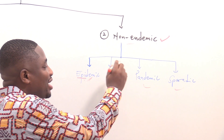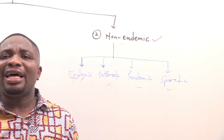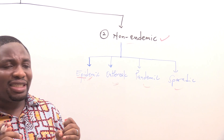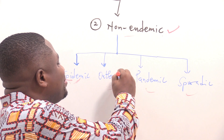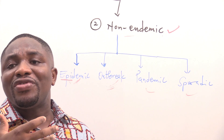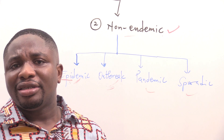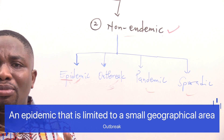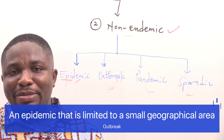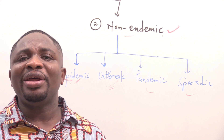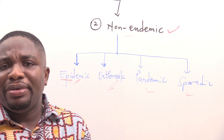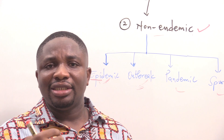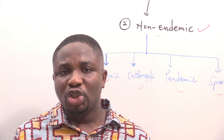Outbreak is similar to an epidemic. The only difference is that an outbreak means there is an increase in the number of cases in excess of normal expectancy, but it is limited to a small geographical area. An epidemic, however, covers a large geographical area — the geographical area considered for an epidemic is greater than that of an outbreak.